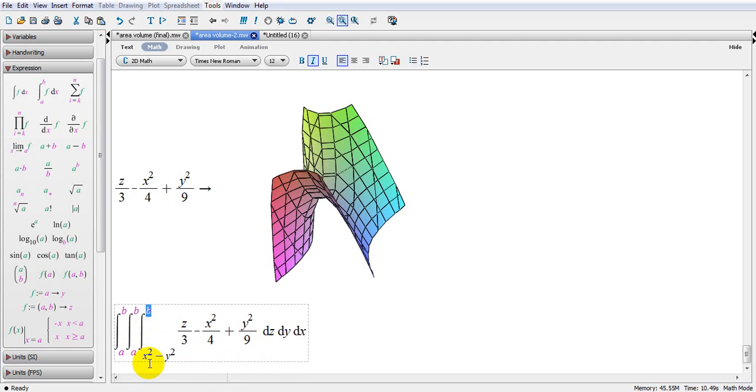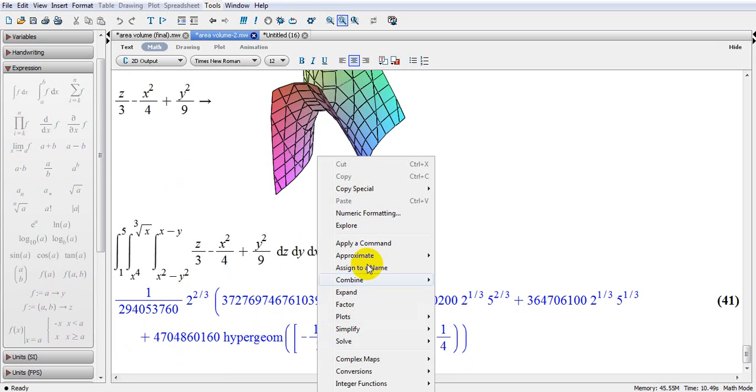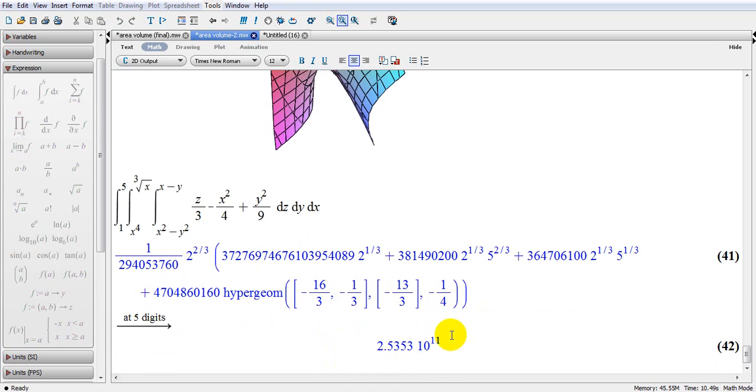Now the limit of Z starts from X square minus Y square. X minus Y is the upper limit. For Y I use the same function X to power 4 and root 3X, and finally for X I will use 1 to 5. Let's check here. You get this value. You want to get the approximation and the answer is 2.53 times 10 to the power 11.